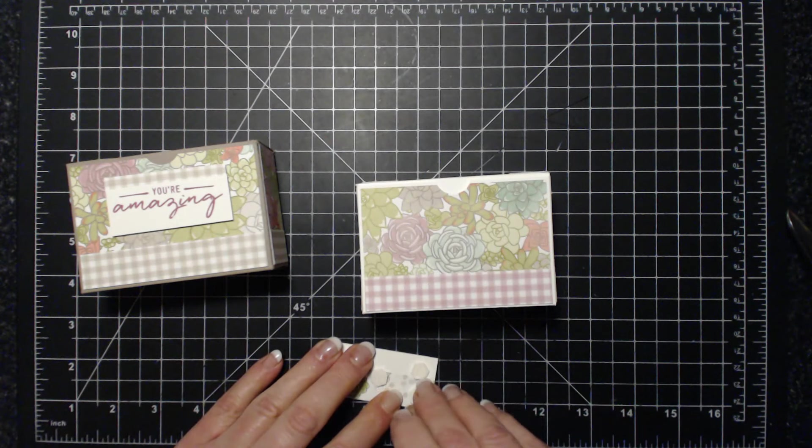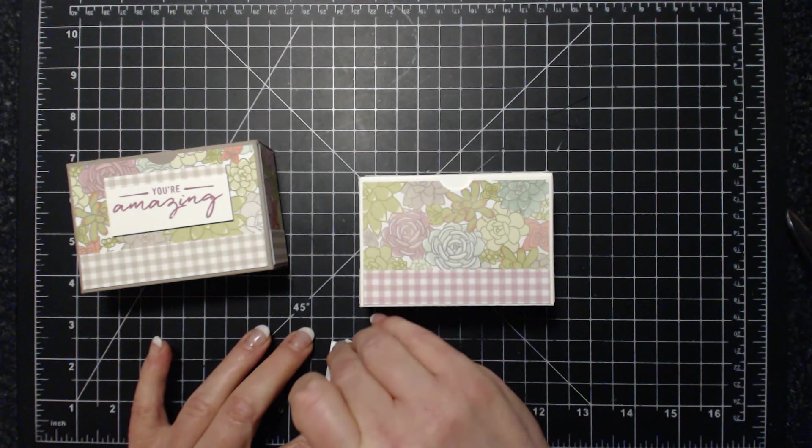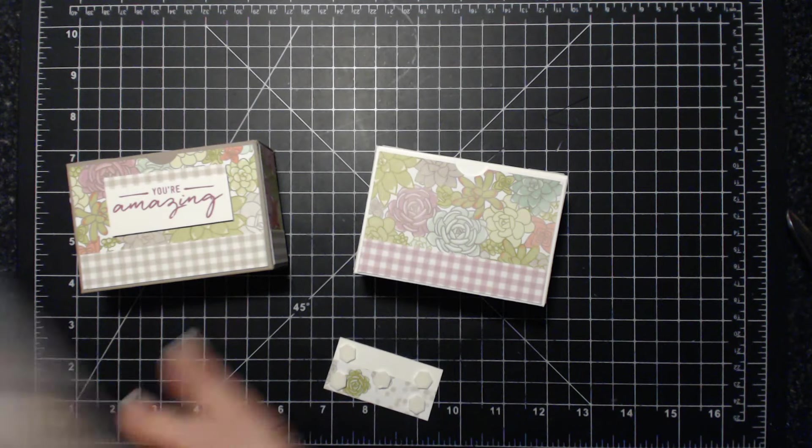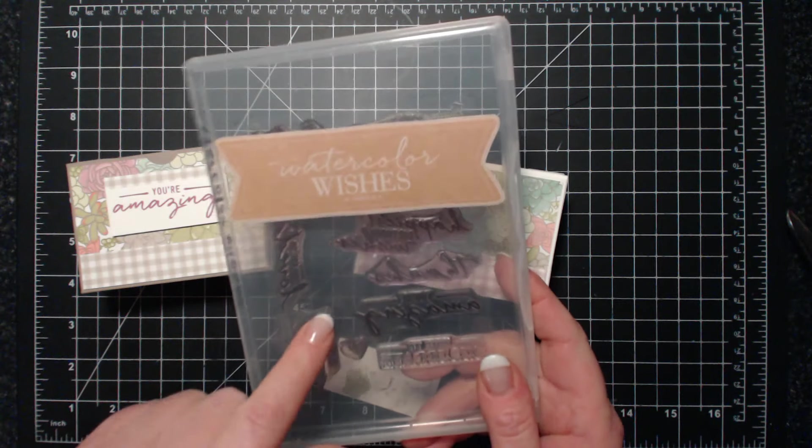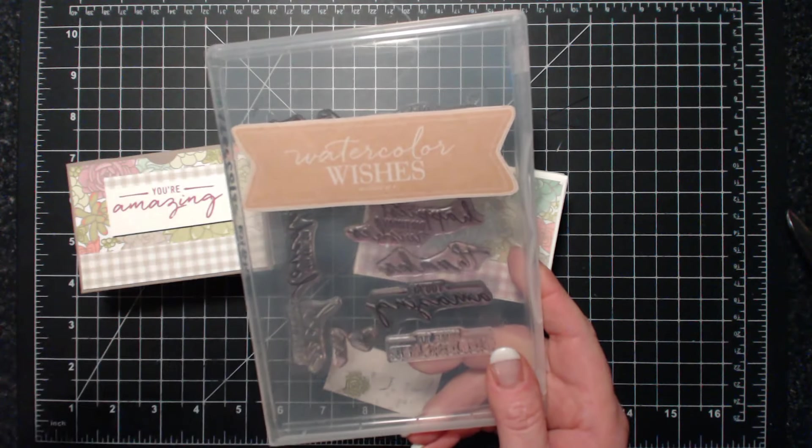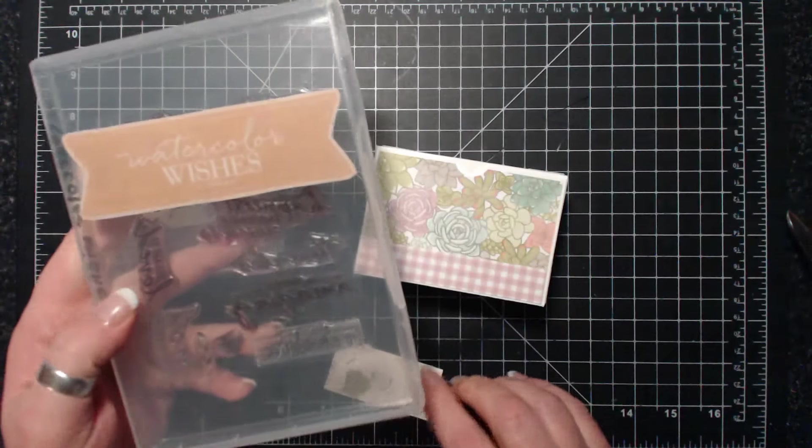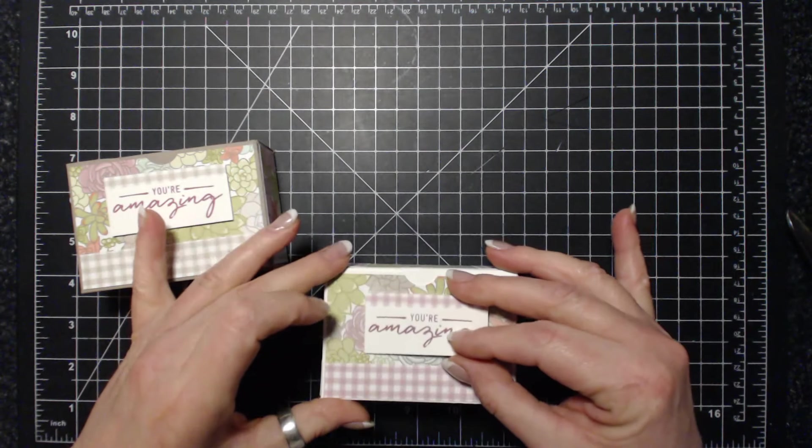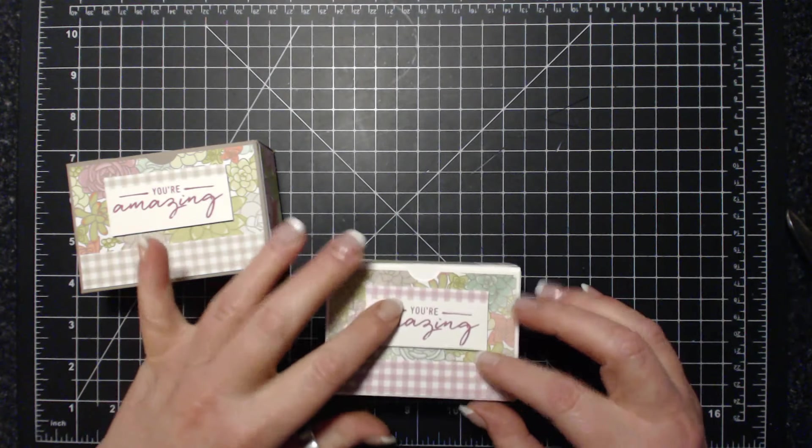I got a little bit of gingham and a little bit of extra whisper white, and I stamped 'you're amazing.' This stamp comes from the Watercolor Wishes stamp set that comes in a kit. The kit is 46 dollars. You get a block and you get a whole bunch of cards and you get this stamp set, so you get a lot of sentiments. It's a great kit, it's in the catalog.